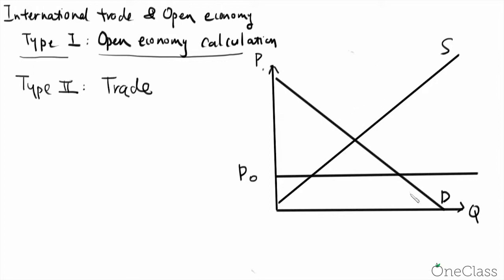So for example, if this is domestic supply, I use SD for domestic supply, and then we have domestic demand.